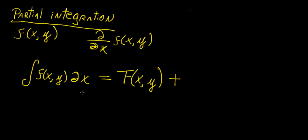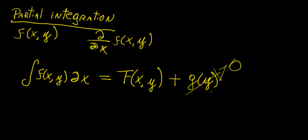So what should the constant of integration be for this indefinite integral or antiderivative? Well, if y is treated as a constant, then our constant term should actually be a function of y alone. The reason is that if we differentiate the whole expression with respect to x, this function of y alone contains no terms of x, so it is treated as a constant and becomes zero.